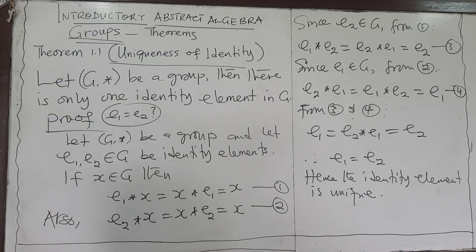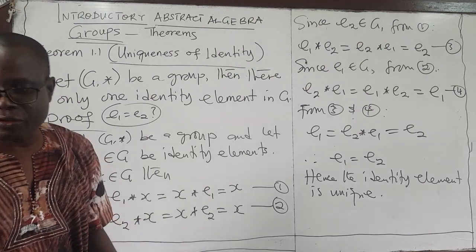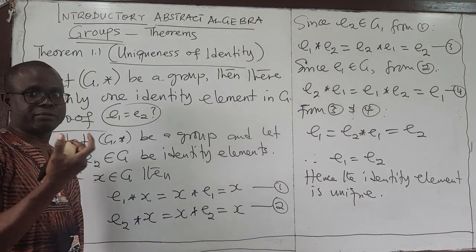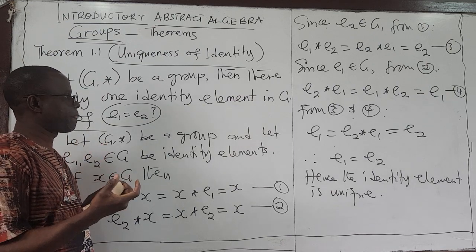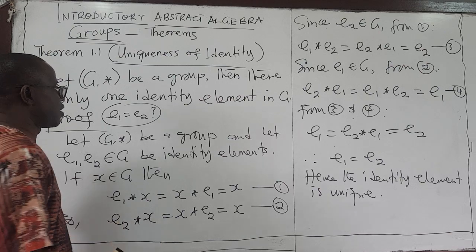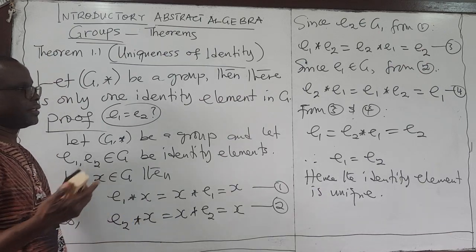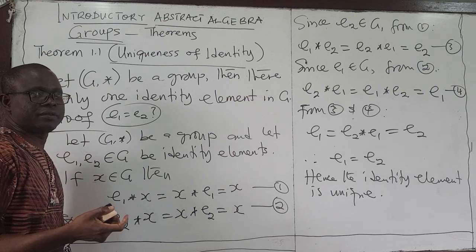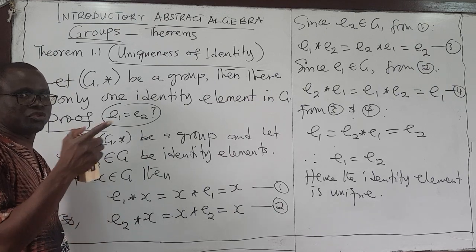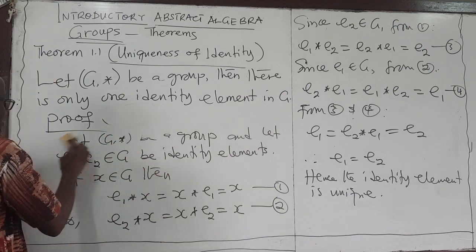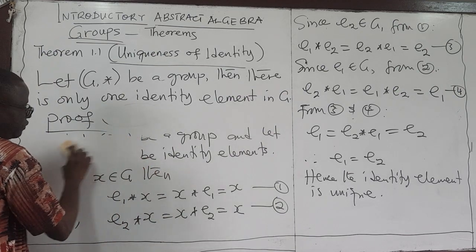So that is how you prove uniqueness in general — assume there are two of them, use the conditions to show E1 equals E2, and therefore the identity element is unique. Also, in the group, remember from the definition that if I take any element X in the group G, X must have an inverse, say X⁻¹. We want to show that the inverse of any element in the group is unique as well — if I take X, I can't have two inverses.